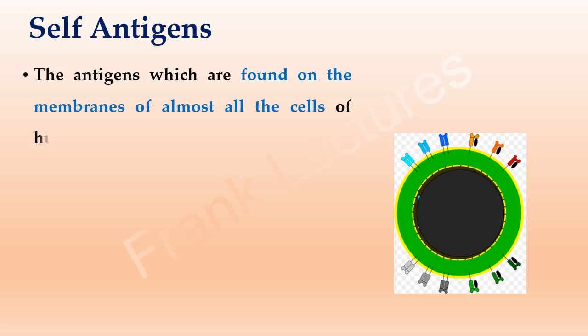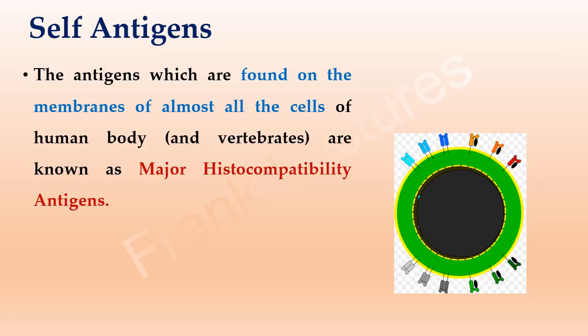Among these self-antigens, the antigens which are found on the membranes of almost all the cells of the human body and other vertebrate animals are known as major histocompatibility antigens. They are glycoproteins in chemical nature.